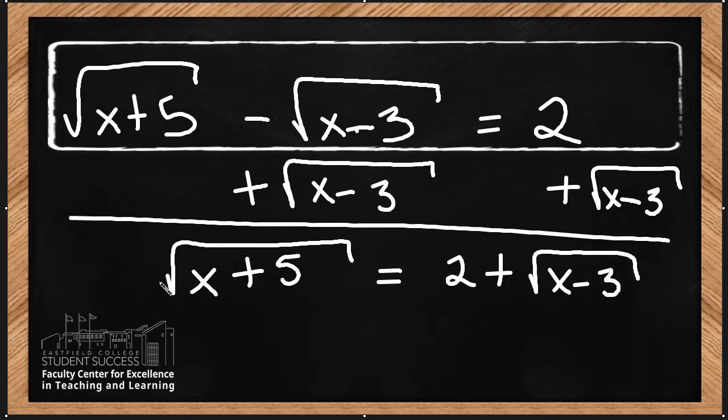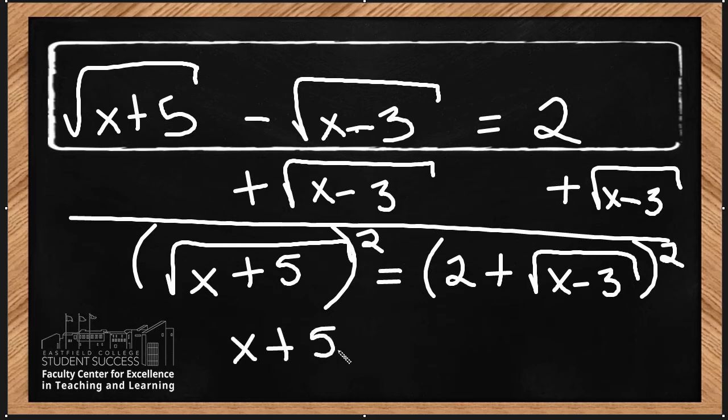Now because it is a square root radical, in order to get rid of that radical, I'm going to square it on one side. Whatever you do to one side, you always do to the other. The square root squared obviously just turns into x plus 5. Now here, 2 plus the square root of x minus 3 quantity squared - I'm going to show you how to evaluate that by foiling.